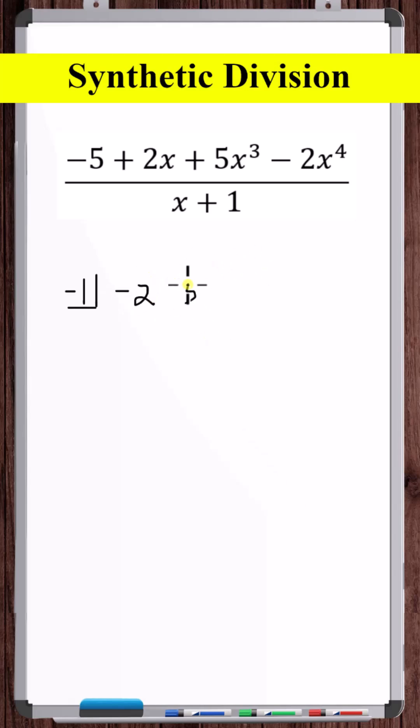So we've got minus 2, 5. We need a 0 placeholder for the x squared, 2, minus 5. Now we leave a space, draw a line, and put a box here for the remainder.